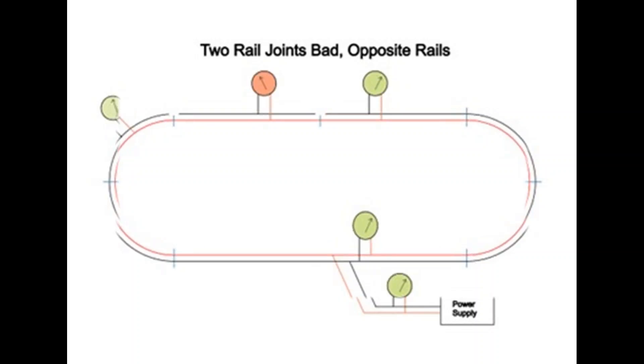Now, what happens when you have two breaks in the rails on the same side in one section? As you can see here, there'll be no voltage for that section. And when the train hits that point, the engine will just stop.